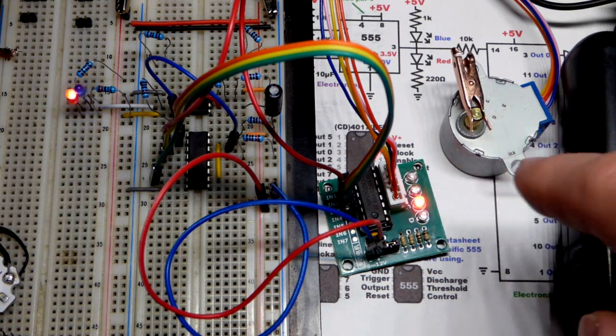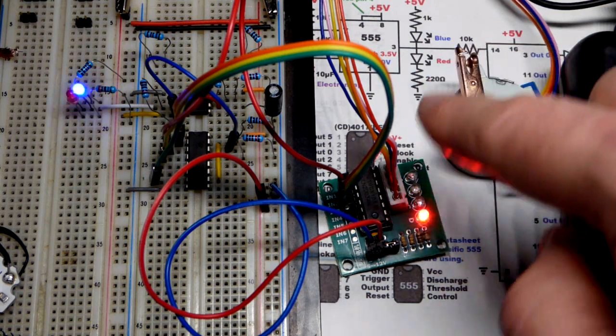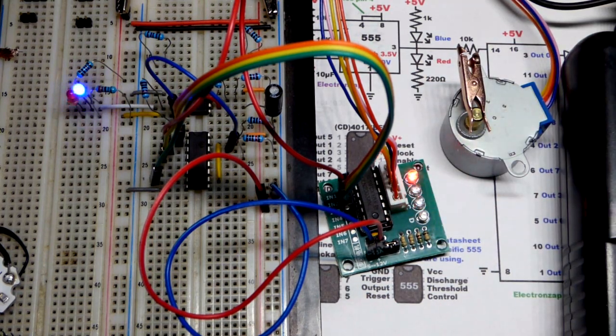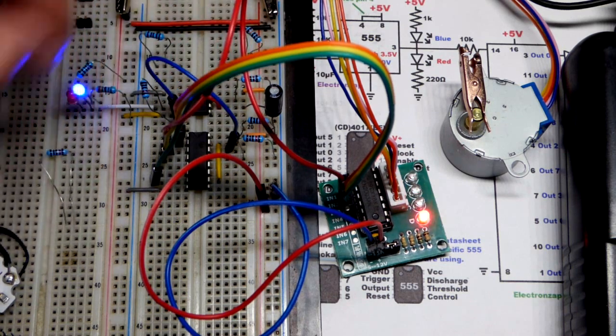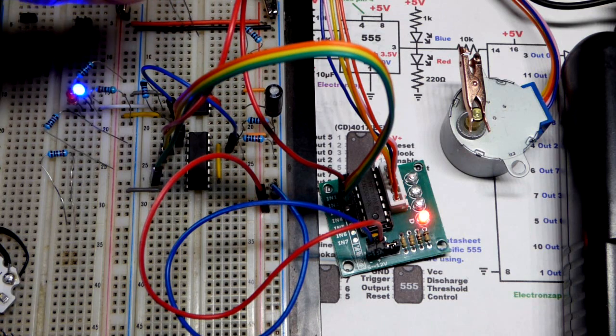But you need many times complete turns inside of here before you get a complete turn right there. So this is with ten kilo-ohm resistors for the timing. It's going very slow, but you could actually still see it moving.